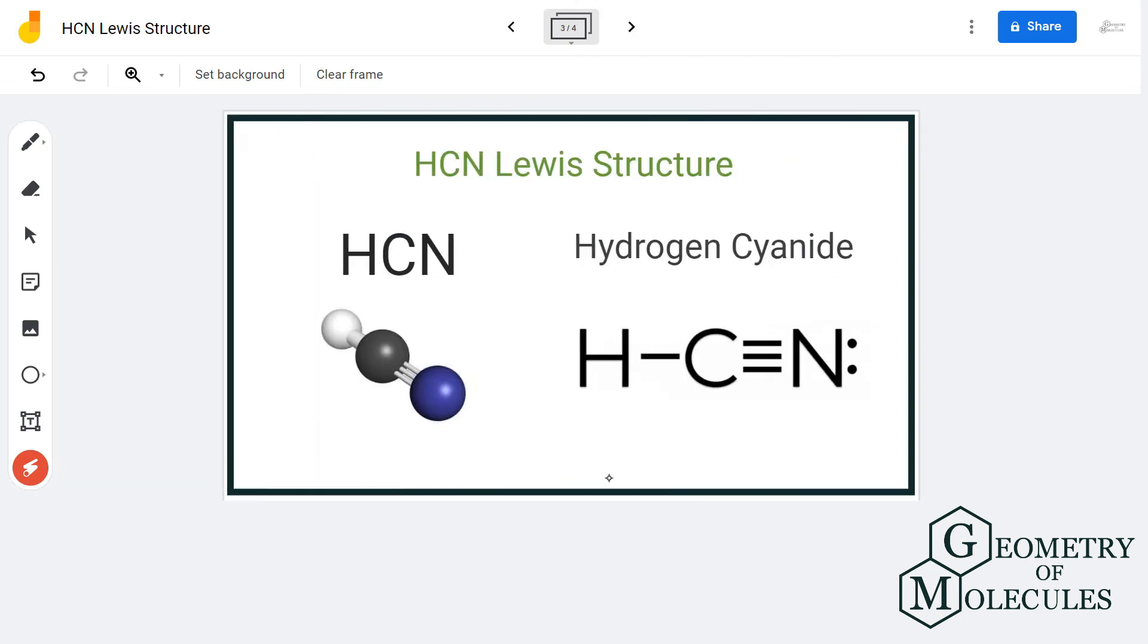So this is the Lewis structure for hydrogen cyanide in which hydrogen and carbon have a single bond and there is a triple bond between carbon and nitrogen.